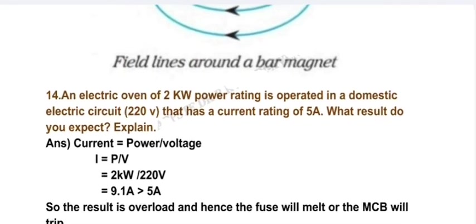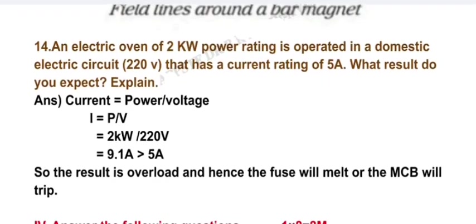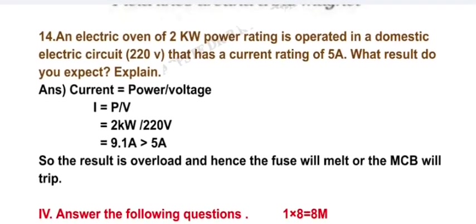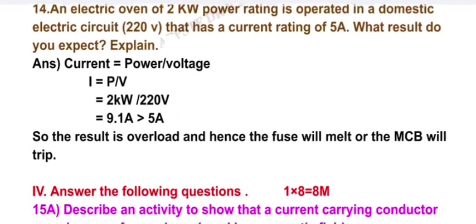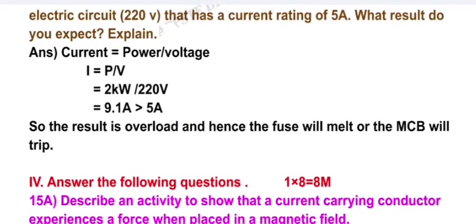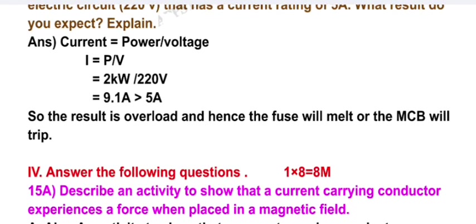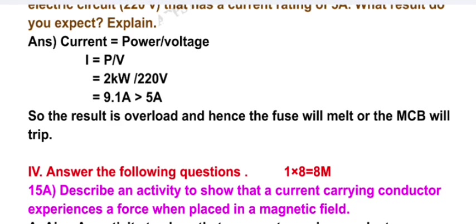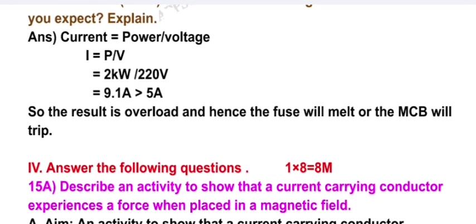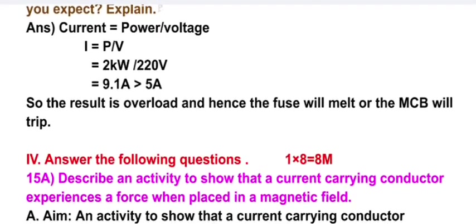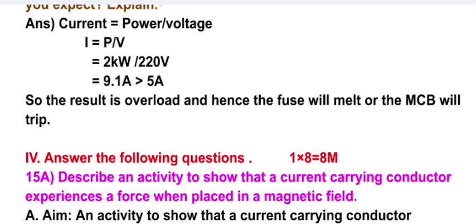An electric oven of two kilowatts power rating is operated in a domestic electric circuit of 220 volts that has a current rating of 5 amperes. What result do you expect? Explain. Current equals power by voltage, so I equals P by V. 2 kW by 220 V equals 9.1 ampere, which is greater than 5 ampere. So the result is overload, and hence the fuse will melt or the MCB will trip.